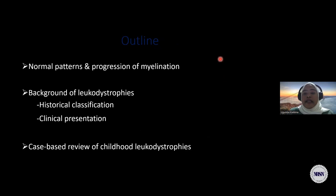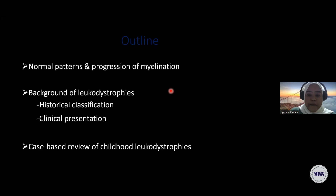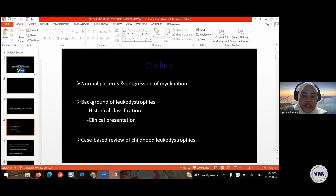This is my presentation outline. I'll quickly talk about the normal patterns and progression of myelination, then give a background on classifications of leukodystrophy. We will dwell on a case-based review of childhood leukodystrophies based on cases we encountered in our setting over the past three years, which have proof of genetic testing, along with some cases from the literature.